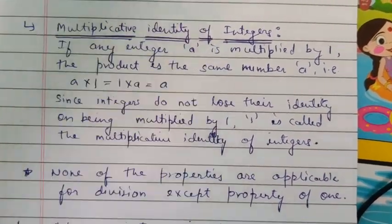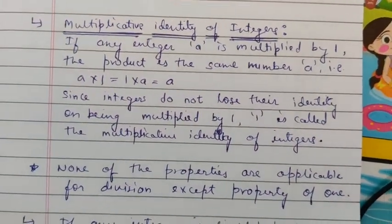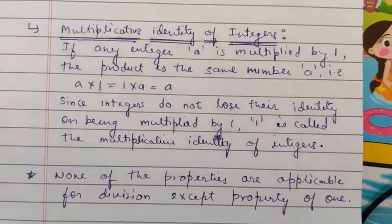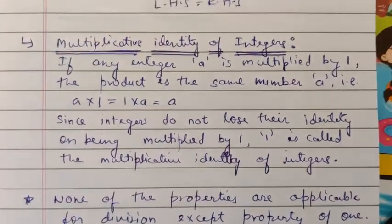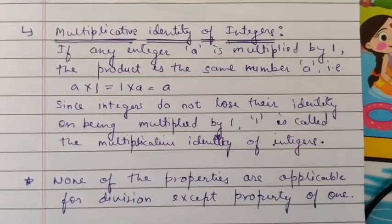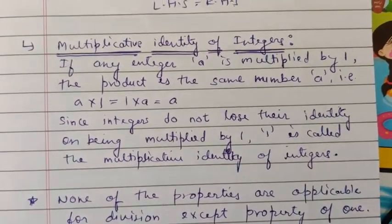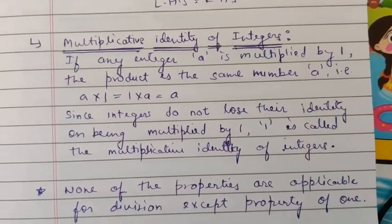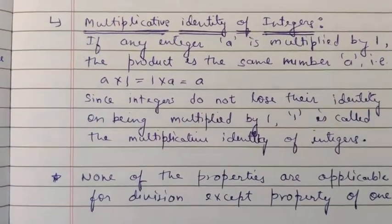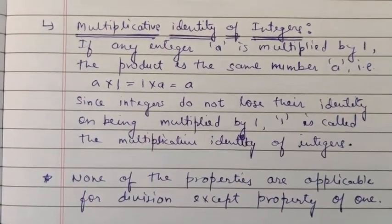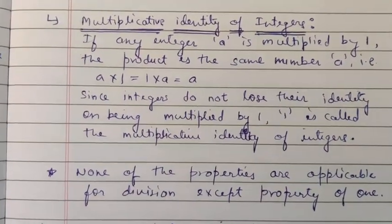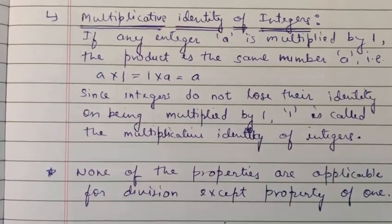If there is any integer, when multiplied by one, we get the same product — the same number — because we multiply by one. This is why one is called the multiplicative identity of integers.